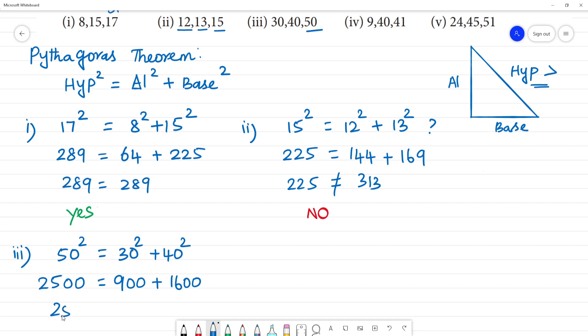2500 equal to 2500, the answer is yes. Third one yes. Next, fourth one: 9, 40, 41.